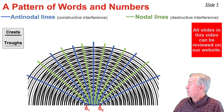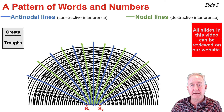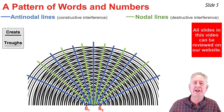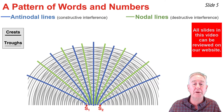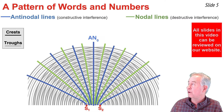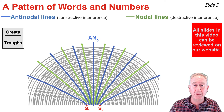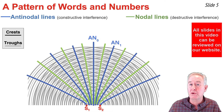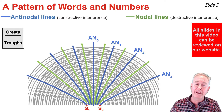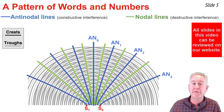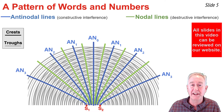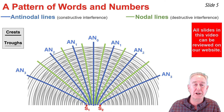The blue lines on the pattern where constructive interference is occurring are known as antinodal lines, and the green lines where destructive interference is occurring are known as nodal lines. Right down the center of the pattern is a blue antinodal line, and we refer to it as the central antinodal line or the zeroth order antinodal line, represented as AN subscript 0. A little bit to the right of this line we see the first order antinodal line, then the second order, then the third order antinodal line, represented as AN with subscripts 1, 2, and 3. We see the same thing to the left of the central antinodal line, numbering outwards towards the perimeter: 0, 1, 2, and 3.